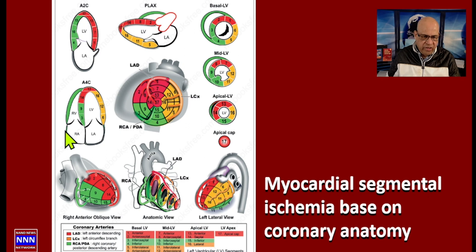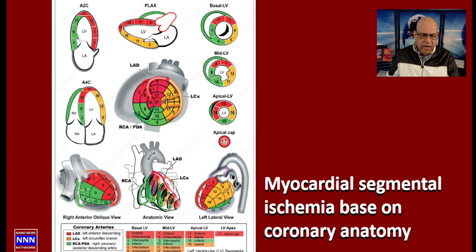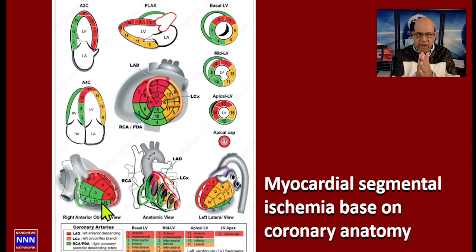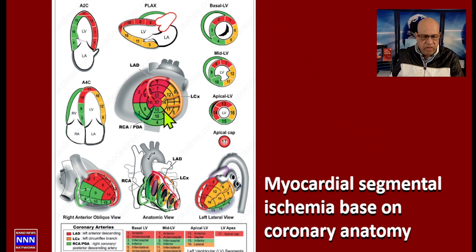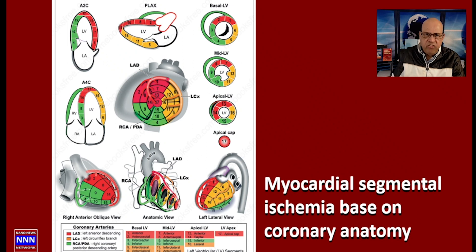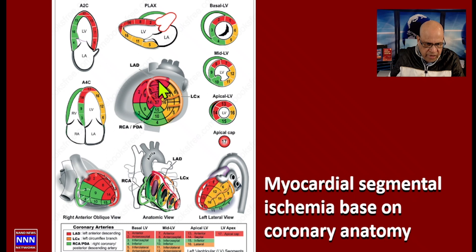The bull's eye view goes from the tip of the heart to the base — the whole thing is pancaked into what we see as the target view. This is the same representation used in echocardiography, nuclear imaging, PET scans, CT scans, and MRA. So we have the left anterior descending supplying the anterior wall and the septum.